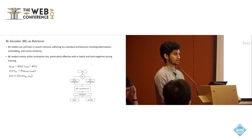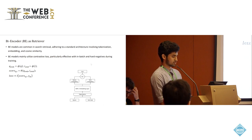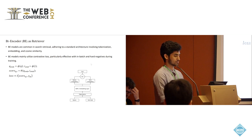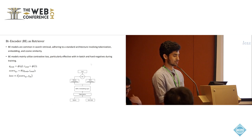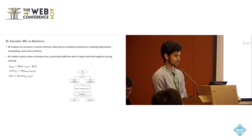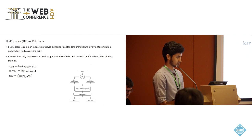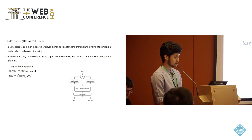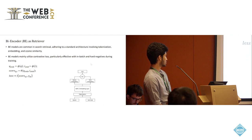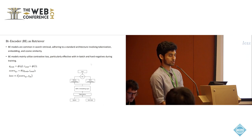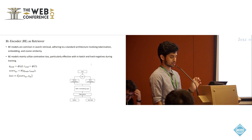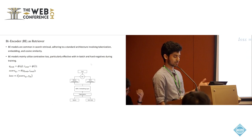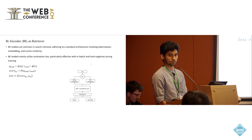BiEncoder is the typical choice for retriever. A typical BiEncoder architecture involves first tokenization, then embedding generation, and then cosine similarity computation — though other similarity functions can be used as well. The diagram here depicts the architecture, where the query and item text are processed individually. They are not allowed to interact with each other, and these entities are processed individually, resulting in query and item embeddings, which we use to compute the similarity score.